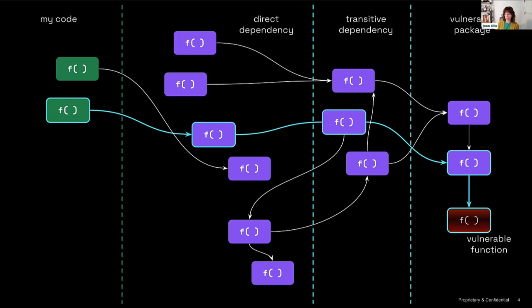A link to a blog post about different types of reachability analysis was shared in the chat. You're going to see a lot of people talking about it, and it doesn't always mean the same thing. The second question: any stats available on how often a true positive vulnerability slips through the funnel and actually gets exploited, even though it was filtered out?